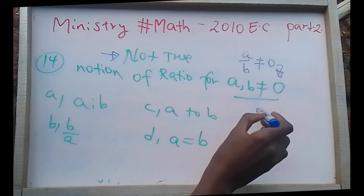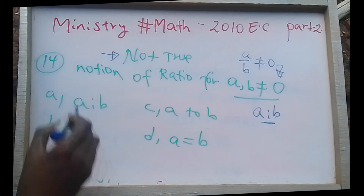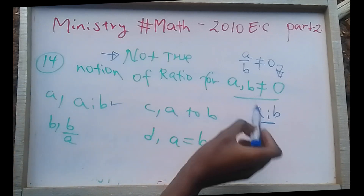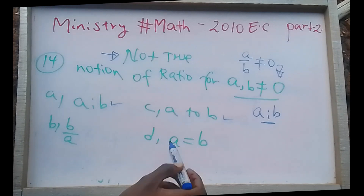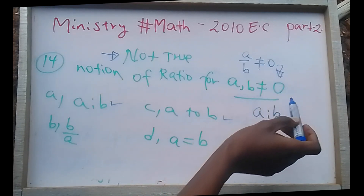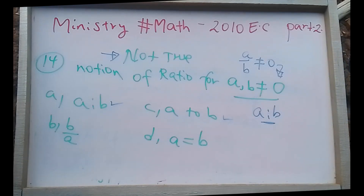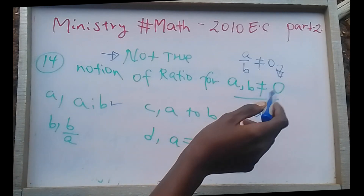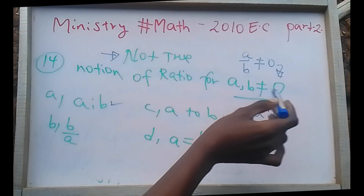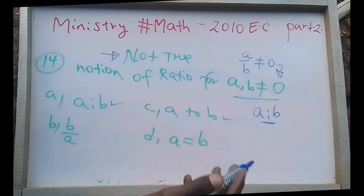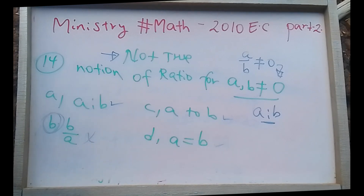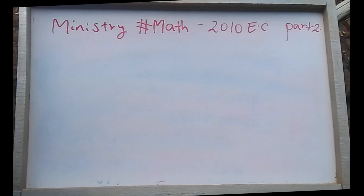A over B means A ratio B — that is true. But the question asks which is NOT true. B over A is checked: if A equals B, then B over A is true. So our answer is B, since B over A does not correctly represent the ratio A to B.